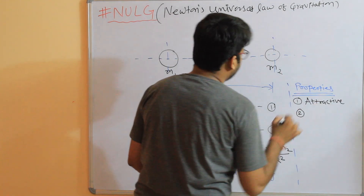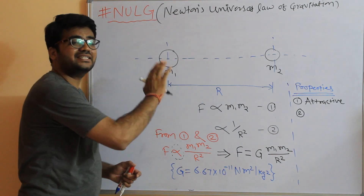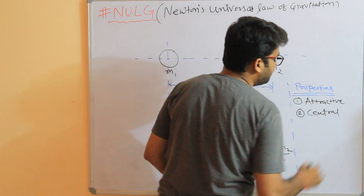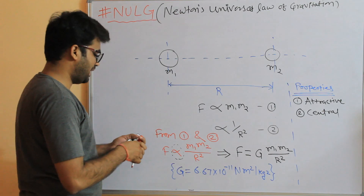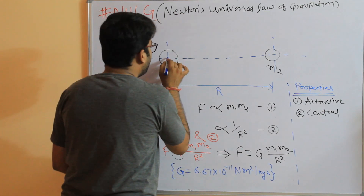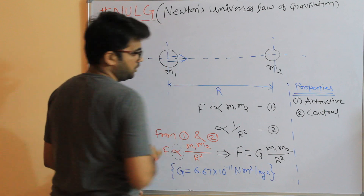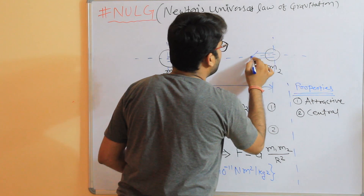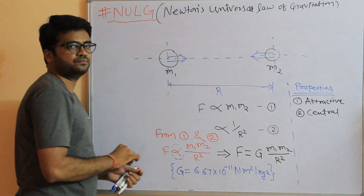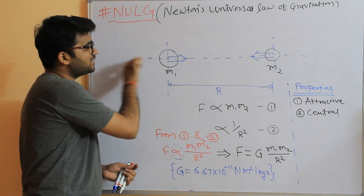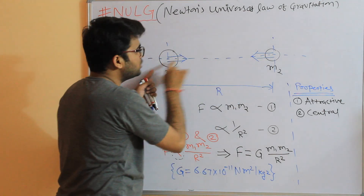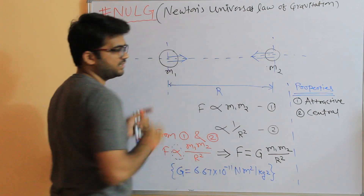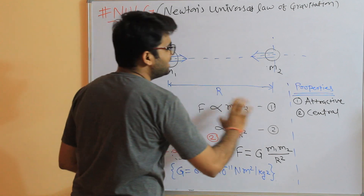Second property: this force is a central force. What does that mean? This means it always acts along the line joining the centers of the two masses. So the force direction always acts along the line that joins the centers of these two masses. This is the central force.